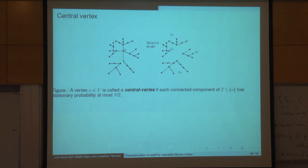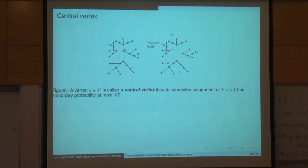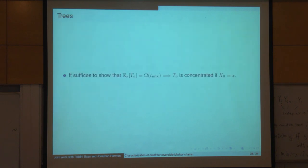If we have a central vertex and a starting point, there's always a set hiding behind the central vertex with respect to that starting point. If I start from x, look at the central vertex, there is the set A of points I can't reach without passing through the central vertex. This set has measure at least one-half, because my component has measure at most one-half. These sets are the hardest sets to hit in a tree.